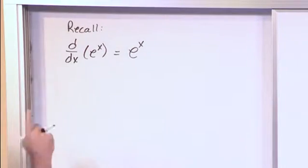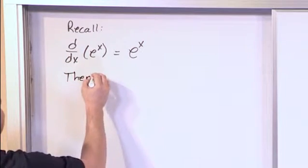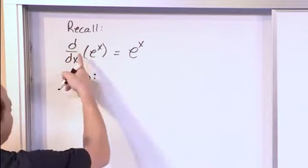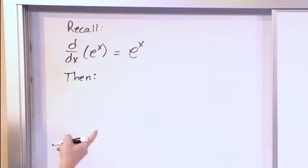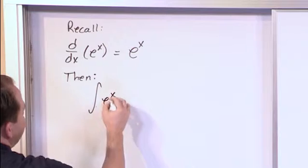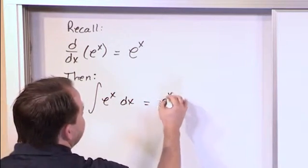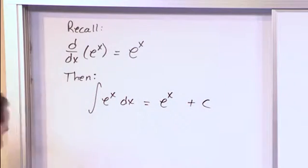And so because this is true, the following is also true and it's equally important. Because the derivative of e to the x is still e to the x, then therefore the integral of e to the x dx must be also equal to e to the x plus a constant, of course. We always have constants of integration.